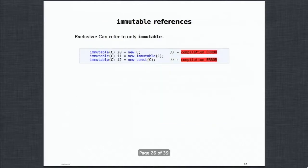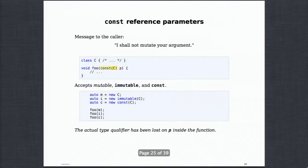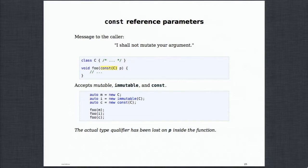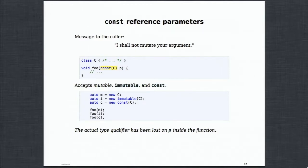The parameter P has no idea what the original type qualifier was — it's just const. Question from audience: what if you try to mutate a const object? Answer: the compiler doesn't allow it. A const is a guarantee that you cannot mutate P nor any state accessed through it — and that's the fundamental reason you can pass an immutable to a const-taking function, because the function gives that guarantee.